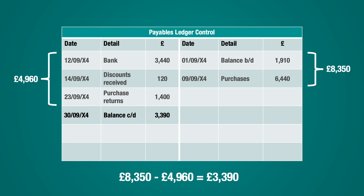Now that this has been entered, our two columns will equal the same amount and this can be displayed within the totals boxes. The final step is to bring our balance carried down onto the higher side of the account at the start of the next period — in this case the credit side — and remember this is referred to as the balance brought down, which will be our starting point for the next period.